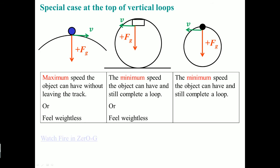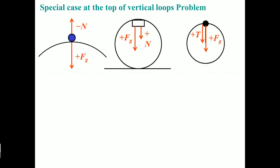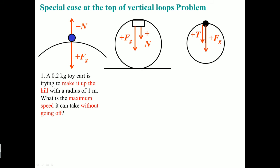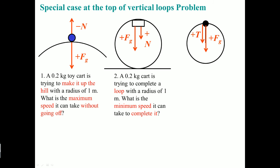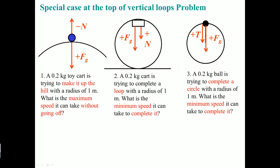If you have time, there's an interesting video about the zero-g plane that gives a good understanding of weightlessness. Now I'll show you the three ways this is typically asked and what keywords to look for. Example one: a 0.2 kg toy cart tries to make it over a hill with a radius of 1 meter — what is the maximum speed without going off? Example two: a 0.2 kg cart tries to complete one loop with a radius of 1 meter — what is the minimum speed to complete it? Example three: a 0.2 kg ball tries to complete a circle with a radius of 1 meter — what is the minimum speed to complete it? The red-marked keywords hint at this scenario.